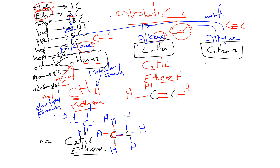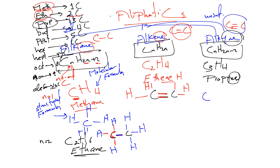For alkyne with n=3, using CₙH₂ₙ₋₂: 2×3–2=4, so the formula is C₃H₄, called propyne. The suffix '-yne' indicates a triple bond. For the structural formula, we draw C≡C–C with at least a triple bond. Drawing out the hydrogens: one on the far left and three on the far right carbon, giving C₃H₄ total.